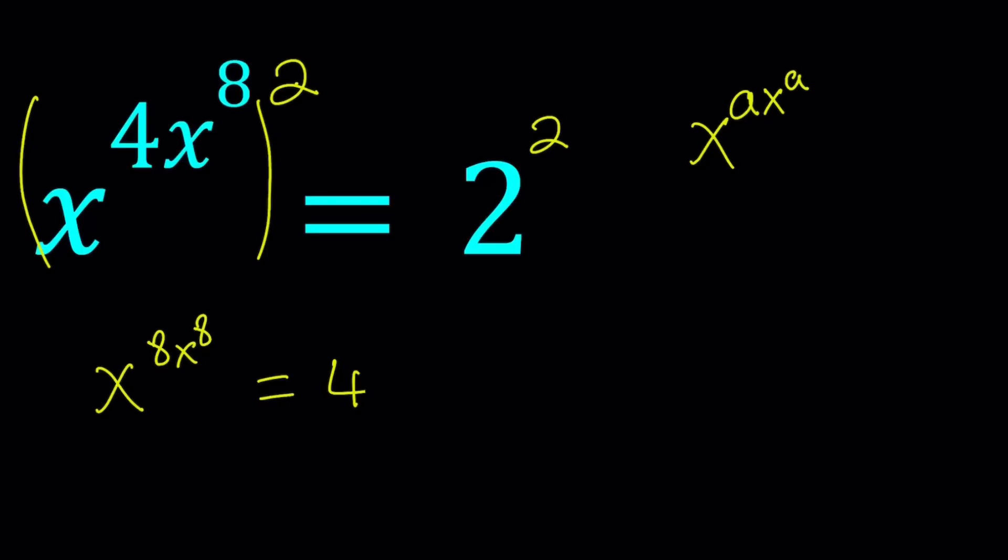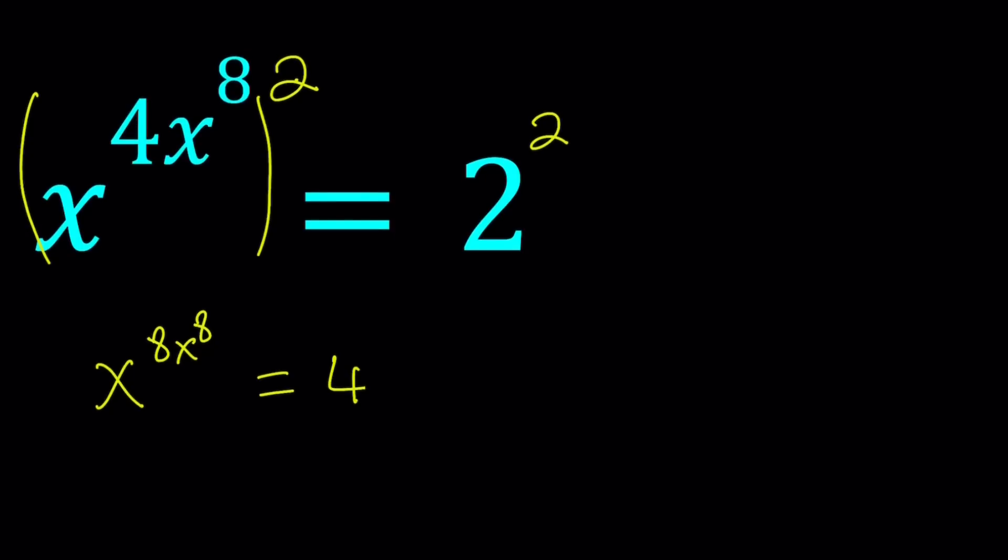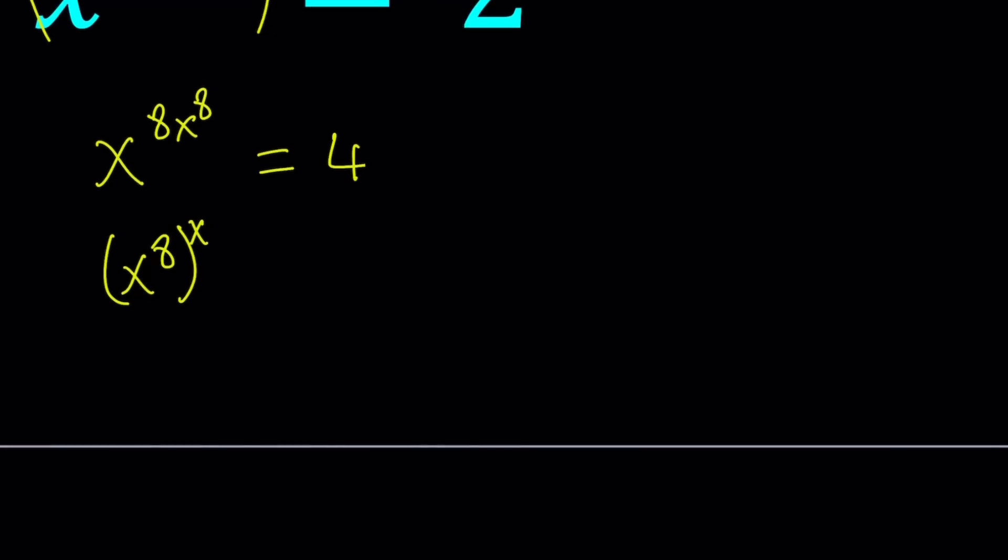When we make those numbers equal, we can use this property of exponents kind of backwards. So x to the 8th times x to the 8th can be written as x to the 8th power to the power x to the 8th. Because 8th and x to the 8th are being multiplied, we can put the 8th inside the parentheses and put the x to the 8th outside the parentheses. And that's kind of good because now we got the same base and the exponents.